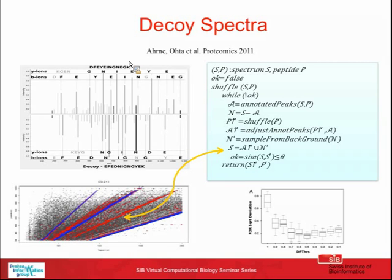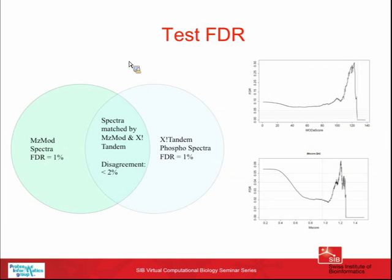Creating valid decoy spectra requires considerable care. The decoy must still look like a real spectrum—it must contain peptide-like fragments, and most peaks are unmatched but still have structure that needs to be retained. If you randomize too much, the randomized spectrum may still resemble the original. We have found an approach that more or less works and regularly verify our FDR calculations using cross-validation.